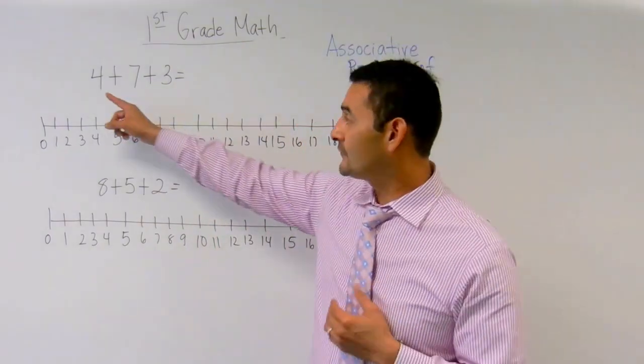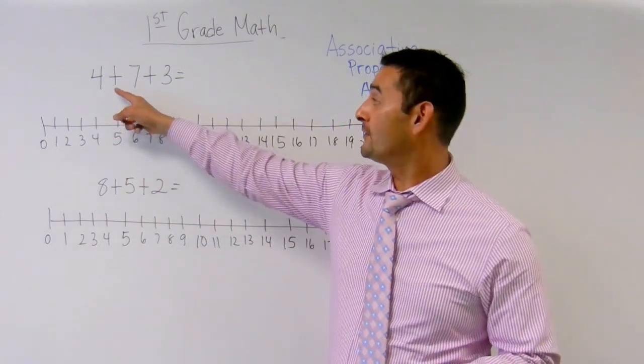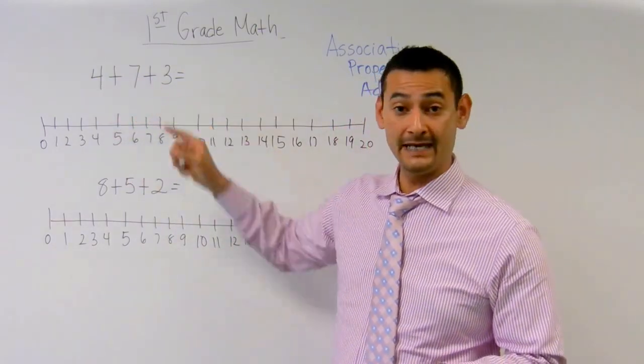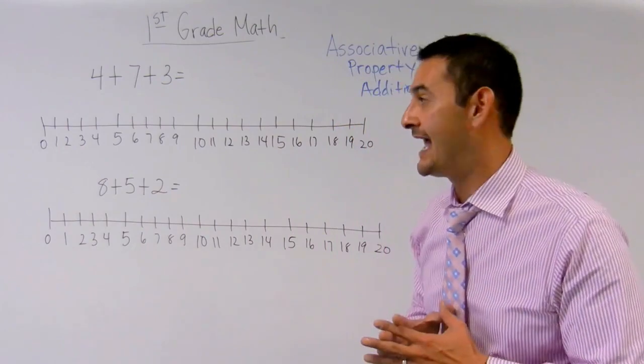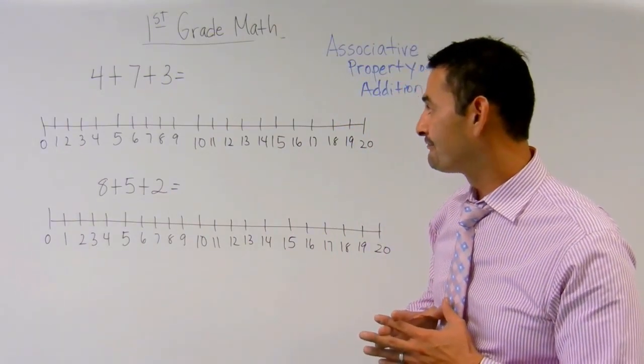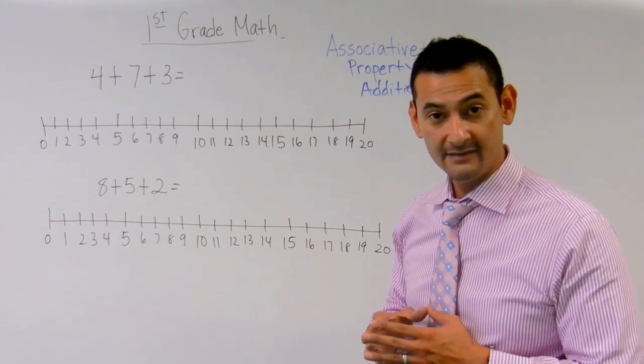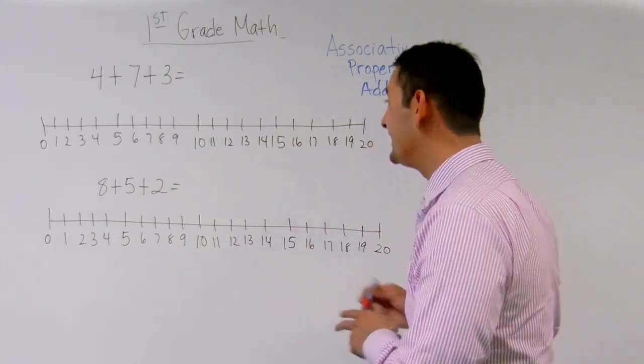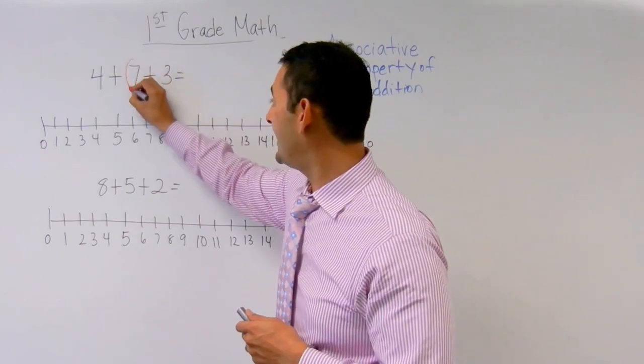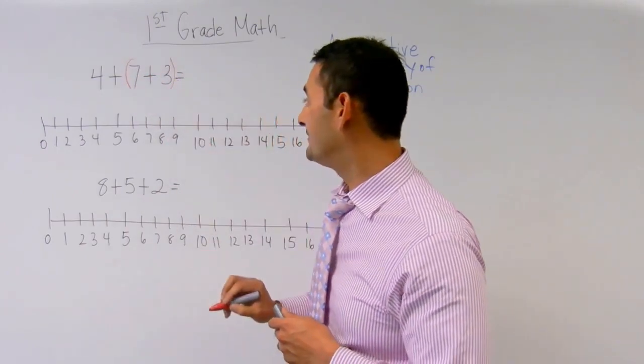So let's take a look at this first problem. This first problem says 4 plus 7 plus 3. Now how do I do that? Is there anything that you see there that can be added easily to make 10? Awesome. 7 plus 3, right? So we can actually break this 7 and this 3 here to make 10.